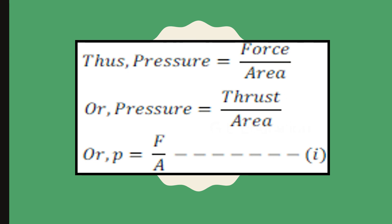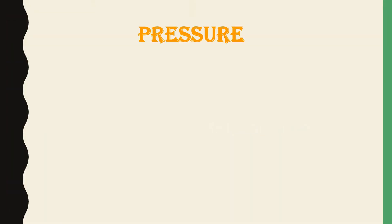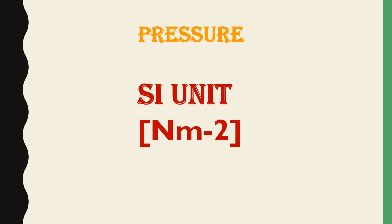The formula for pressure is: Pressure = Thrust / Area of contact. The SI unit of pressure is Newton per square meter, denoted as N/m².